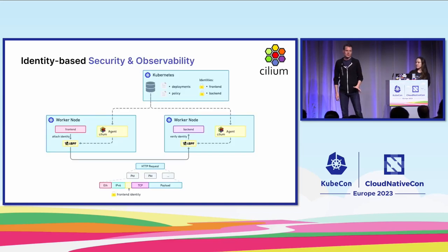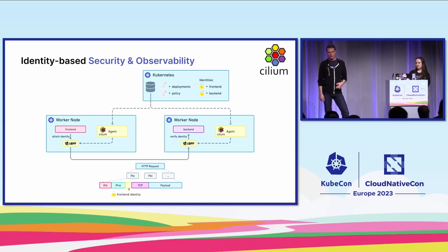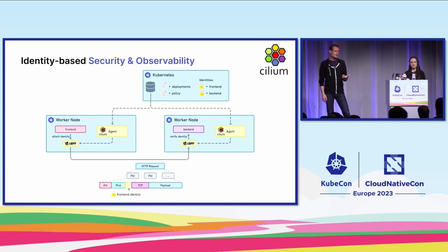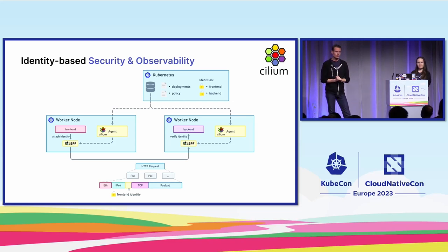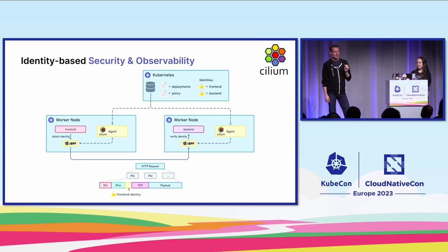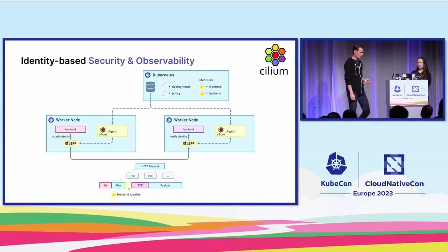In the context of Cilium, it's important that I explain identity-based observability and security. This is used throughout our applying network policies on the network, applying security, but also observability. How we do it is based on the labels and metadata you set for your workloads. We create for each unique set of data an identity. This is a cluster-wide property which we use throughout the cluster to secure workloads and to observe workloads. For example, when a front-end sends traffic to the back-end, we identify those as a unique set of labels, therefore they are unique identities.